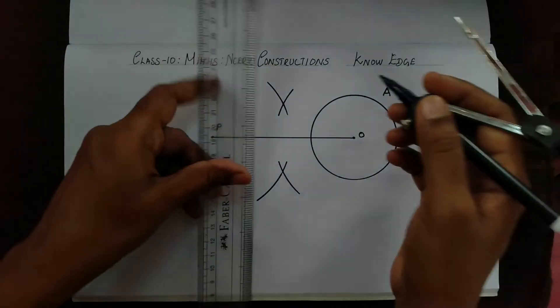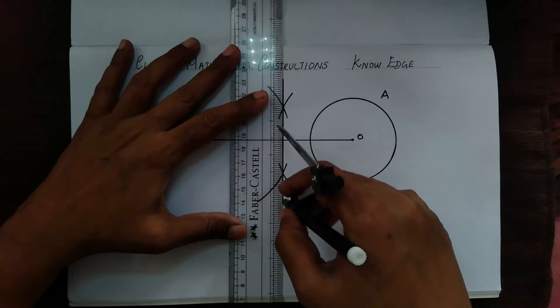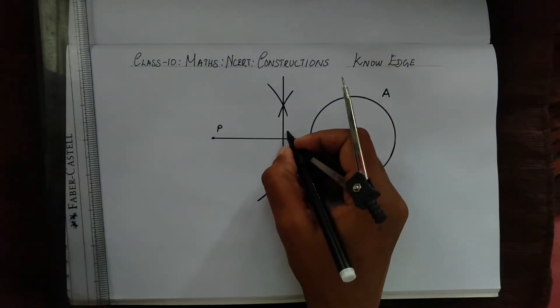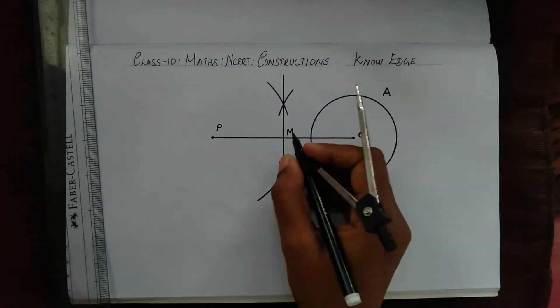Now let's join these two arcs. This is the midpoint of this line OP and we have named it as M.